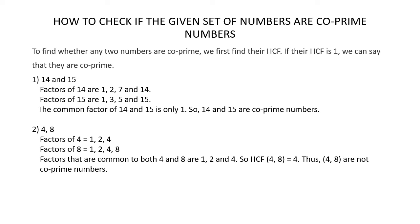Now let's learn how to check if a given set of numbers are co-prime numbers. To find whether any two numbers are co-prime, first find their HCF. If their HCF is 1, then the given numbers are co-prime.